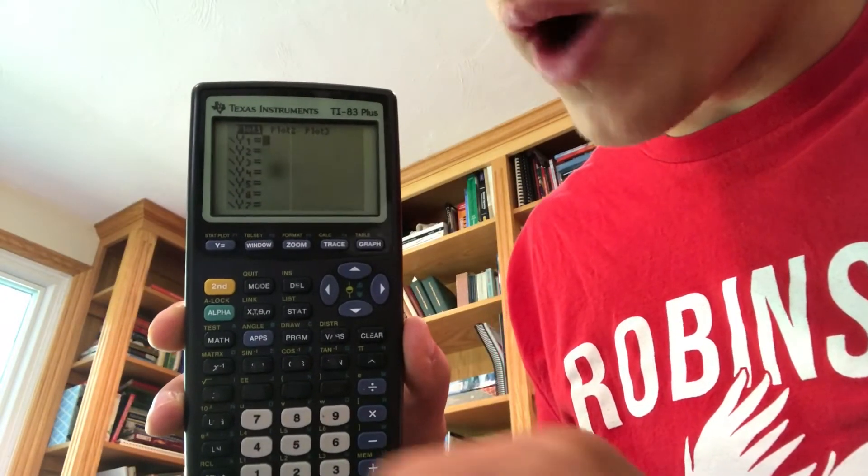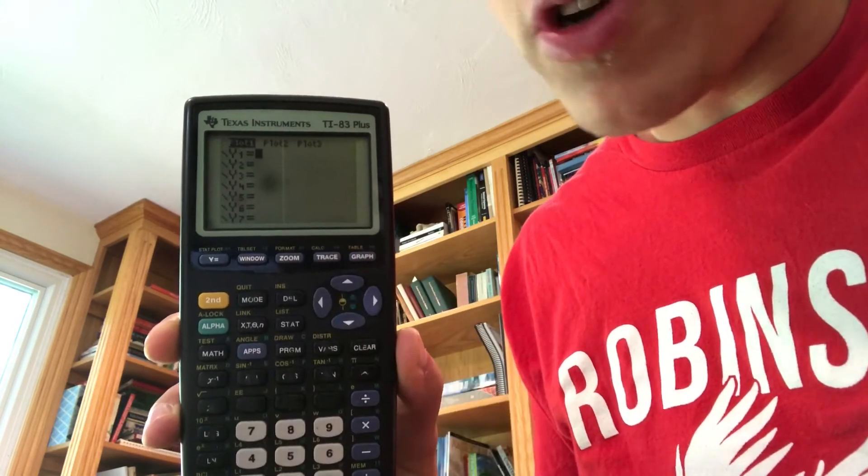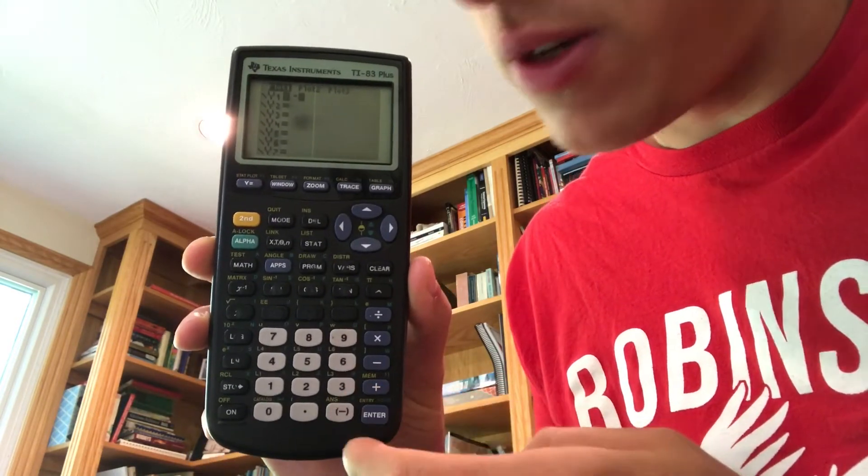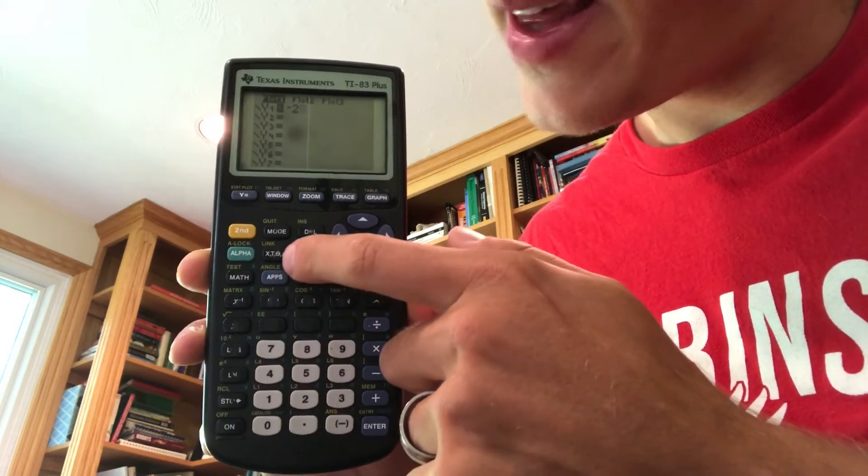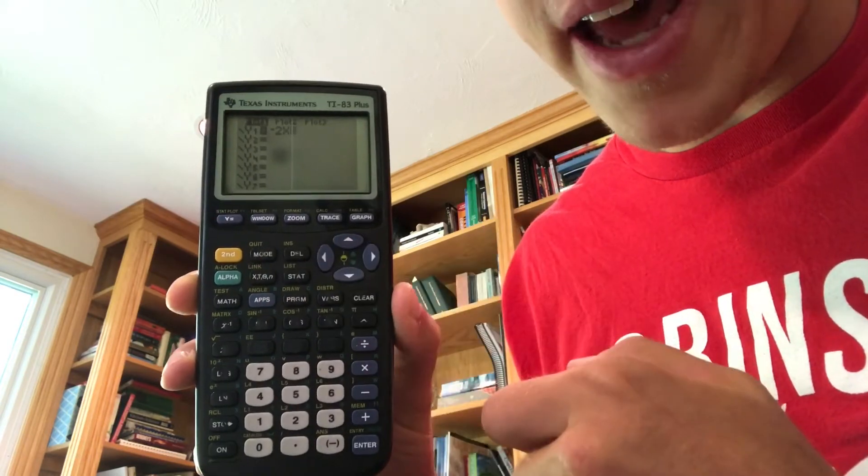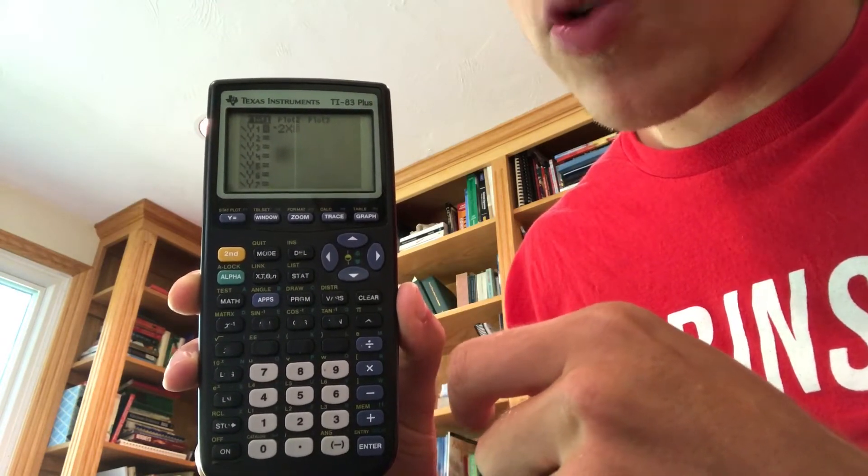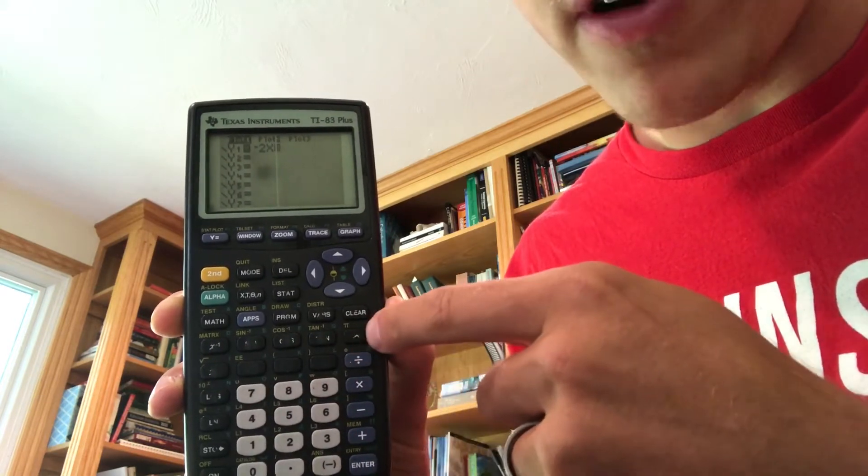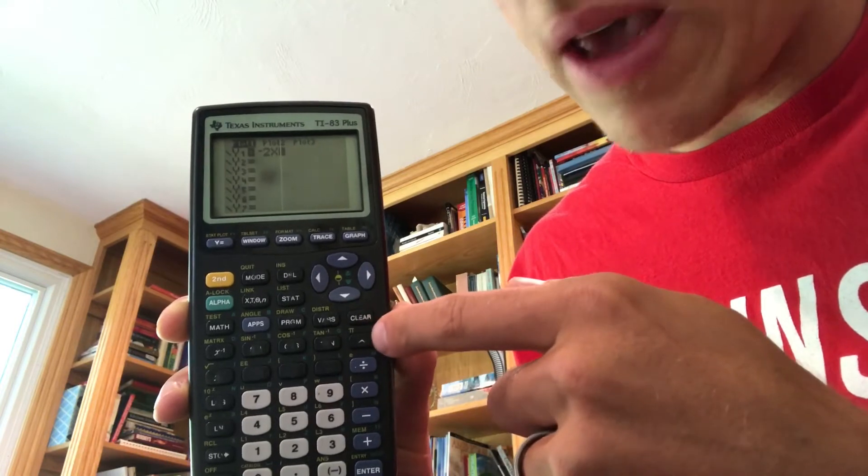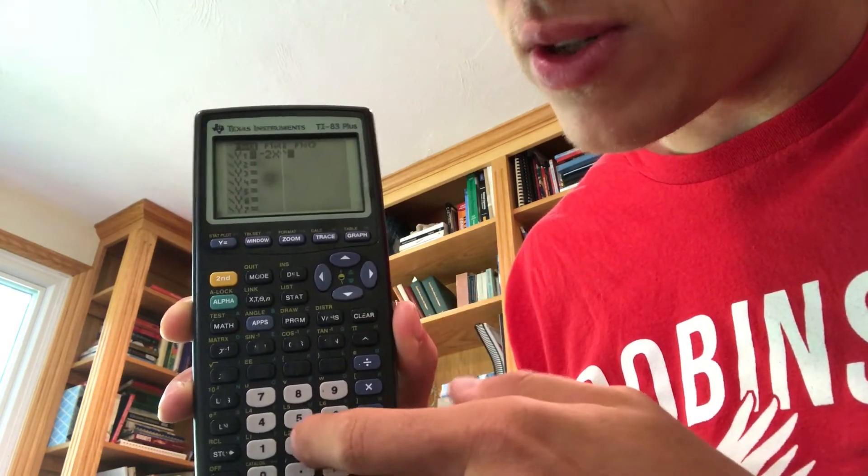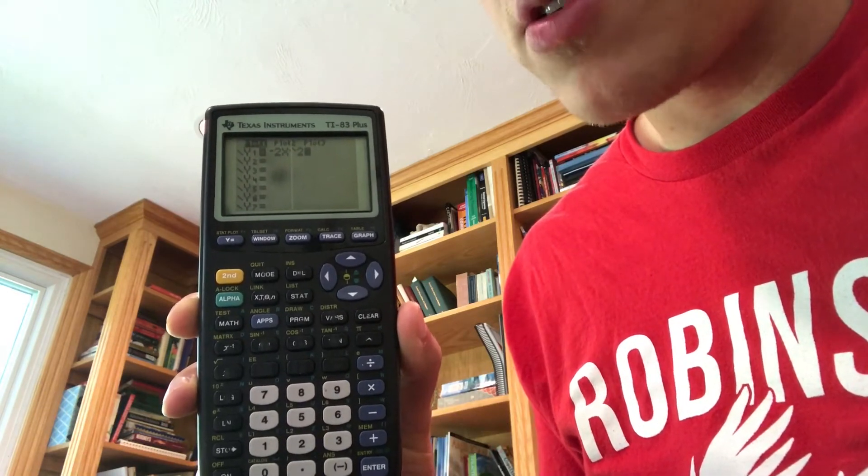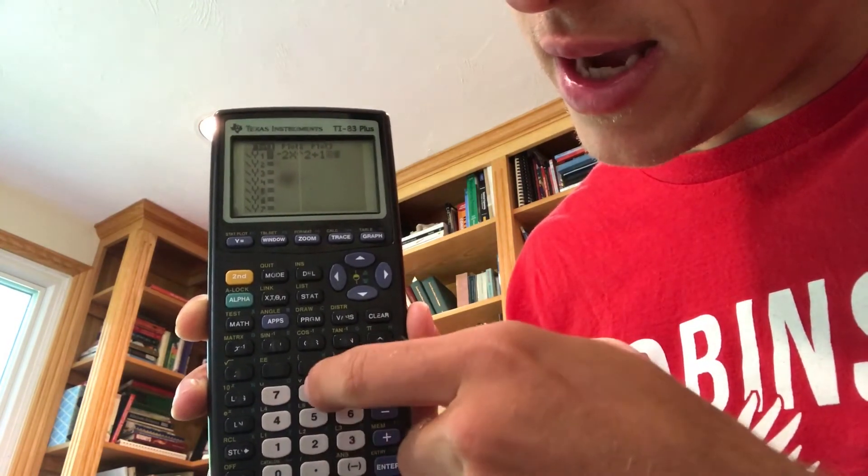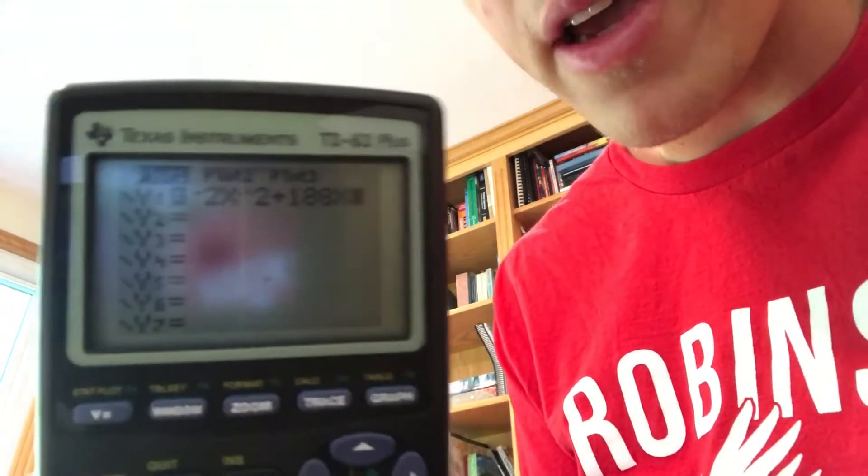So first off, we're going to want to go to y equals. Once you're in y equals, we want to put in negative 2x squared. So we're going to put in the negative, which is down here, 2. And then we're going to go to this button that has x, a t, a theta, and an n. Click that. And then we're going to square it. You can't see it as well in mine. Yours should be right over here. It's going to say x to the 2. You could also use this little caret key. So I'm actually going to do that right now. Caret, and then I would put 2 because it's going to be an exponent. Then I'm going to do plus 188x. So plus 188 and then, again, that x.